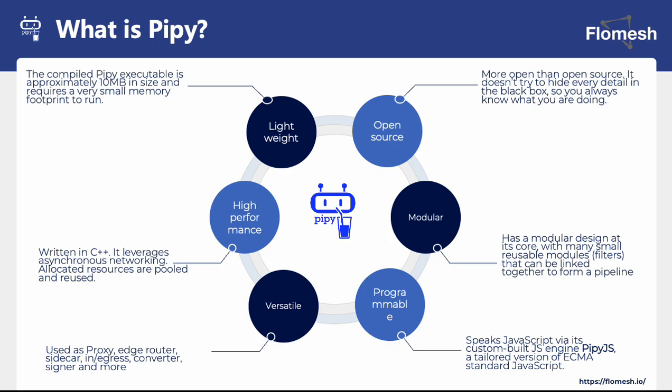The compiled Pype executable has zero external dependency and is around 10 megabytes in size, requiring very small memory to run. Pype is written in C++. It leverages asynchronous networking and allocated resources are pooled and reused. Pype is versatile and has been used or can be used in multiple use cases, which were explained in the previous slide.